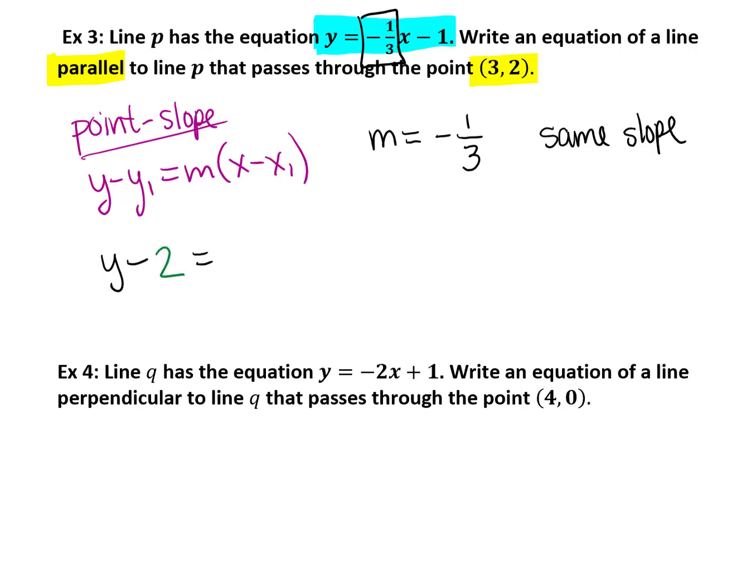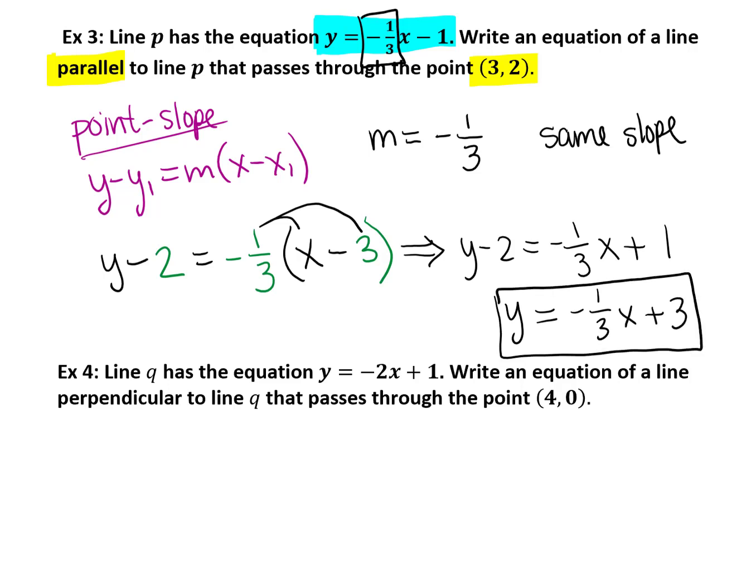We also know that we're given the coordinate (3, 2), so we're simply going to substitute in x equals 3 and y equals 2 for this equation. After we distribute and simplify and put this in slope-intercept form, we end up with an equation of y equals negative one-third x plus 3. So this is your equation parallel to line p, given at the beginning of the problem.